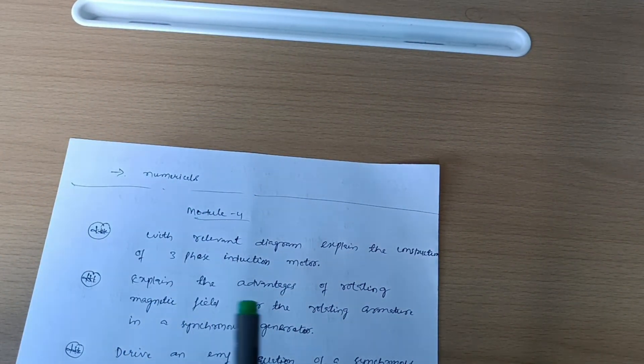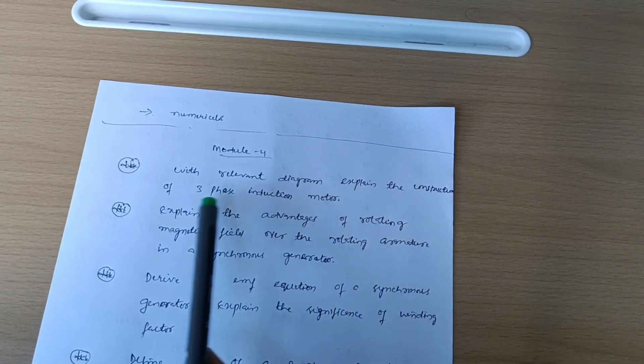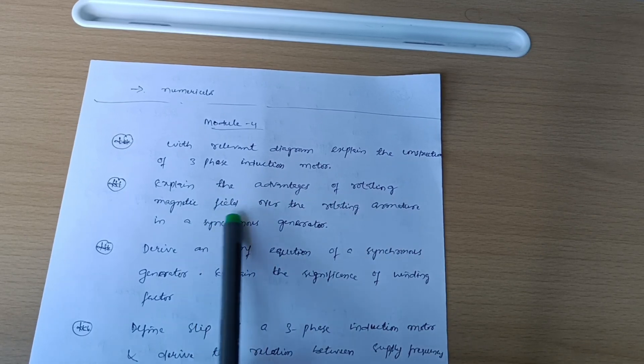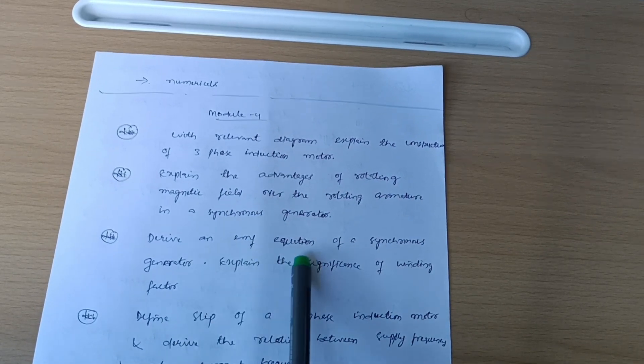Next is Module 4. With relevant diagram, expand the construction of three-phase induction motor. Expand the advantage of rotating magnetic field over the rotating armature in a synchronous generator. Derive an EMF equation of a synchronous generator.